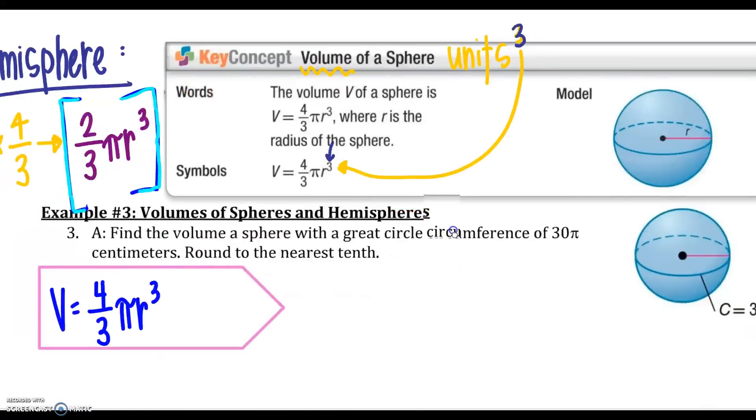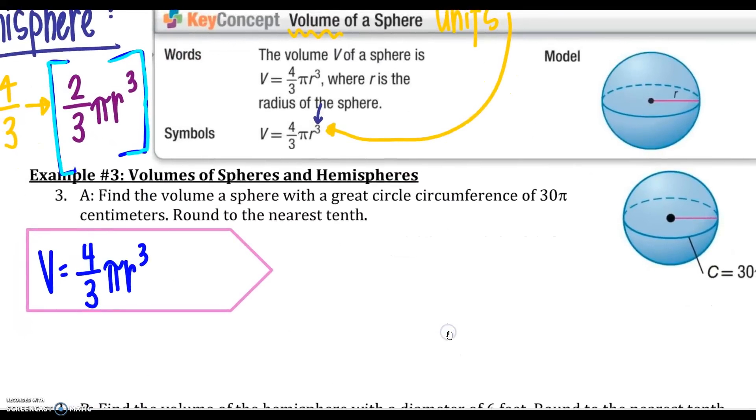All right, so I need to find the volume of a sphere. So volume of a sphere tells me I need to use the 4/3 with a great circle circumference of 30π. Circumference, remember, is 2πr. So we need to find the radius to plug in there. So 30π equals 2πr. Solve for that radius. Divide by 2π. So my radius is going to equal 15. All right, so after my radius equals 15, I'm going to just plug it into this r right here. So I'm going to follow that volume formula. 4/3π(15³).